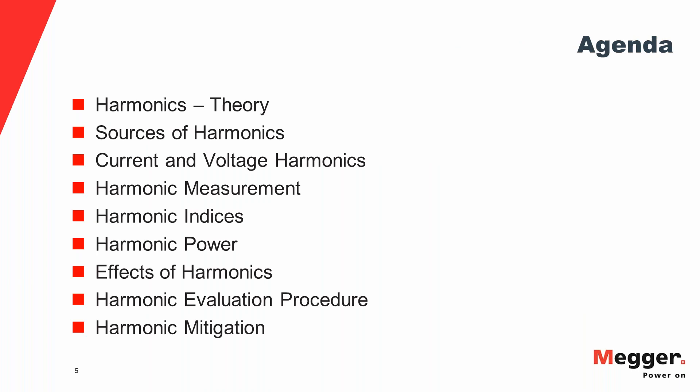Today's agenda — the points we are going to cover include: first, theory on harmonics; then sources of harmonics and how they are generated; third, current and voltage harmonics; how harmonics are measured; harmonic indices such as THD and TDD; harmonic power flows; power factor; effects of harmonics; harmonic evaluation procedure; and harmonic mitigation techniques. These are the points we'll be covering, so let's start off with the first section.